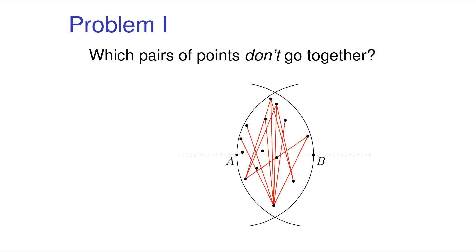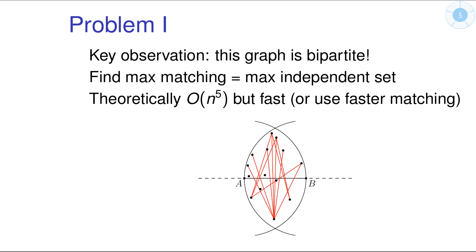Now comes the important observation, the most important one in this problem. This graph where the points are the vertices and the red lines are the edges. This graph is bipartite. So there cannot be any conflict in the upper half. There cannot be any conflict in the lower half. All of the conflicts have to cross the A and B segment. So we can divide the points into the upper and the lower partition.